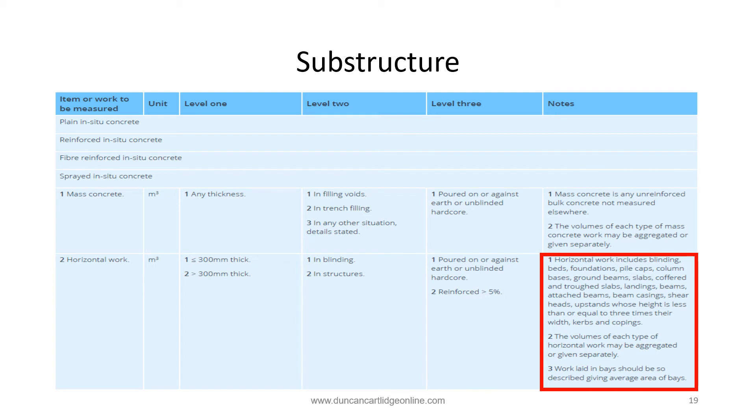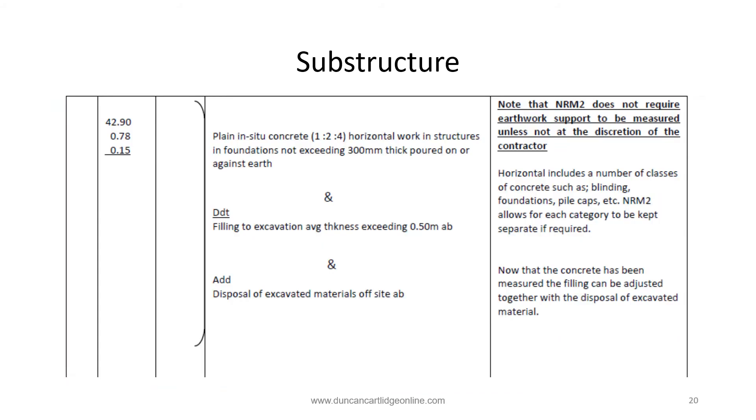In situ concrete work is another work section where the taker off has alternative approaches to describing items. The foundation may be described as horizontal work or foundations as notes and comments. Note that the concrete work is poured directly onto earth or unblinded hardcore and this has to be described. The reason being that concrete is deemed to be poured into formwork and pouring on earth will require more than the net volume of concrete as this method of placing is so imprecise. The estimator should allow a percentage addition to the bill of quantities to allow for this.